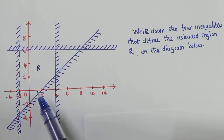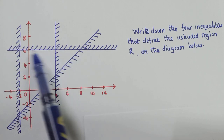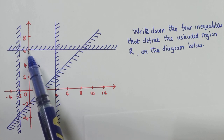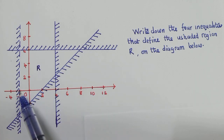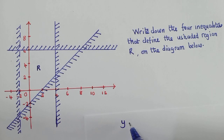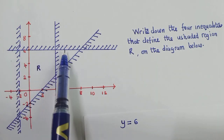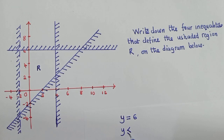The easiest ones are those passing through only one axis. This one is passing the y-axis at point six, this one at point four on the x-axis, and this one at negative two on the x-axis. We'll start with the one passing at six on the y-axis — so y equals six. That's the line, and to show the inequality we say y is less than or equal to six.